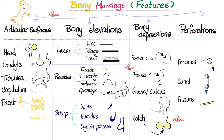Next, bony elevations. We have linear elevations, rounded elevations, and sharp elevations. For linear elevations: the faintest is the line. Make it thicker — ridge. Make it thicker and more elevated — crest. Like the iliac crest of your hip bone.